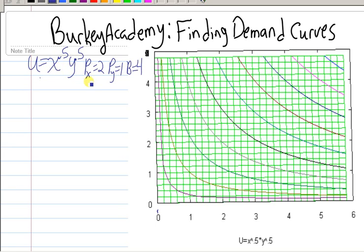To start with, let's look at supposing the price of x is 2, the price of y is 1, and we have a budget of 4.